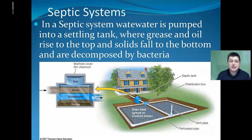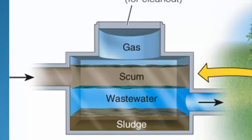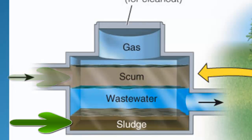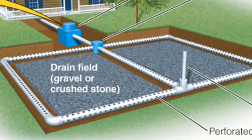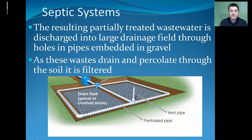In a septic system, when you flush a toilet or turn on a sink, the material that goes down the drain enters a settling tank. Grease and oil, being less dense, rise to the top, while solids fall to the bottom and are decomposed by bacteria. The wastewater is then connected to a pipe leading to a distribution box, which is connected to a series of perforated pipes surrounded by gravel or crushed stone — this area is called the drain field. Water moves into the drain field and percolates through the soil, where soil bacteria further filter the wastewater.